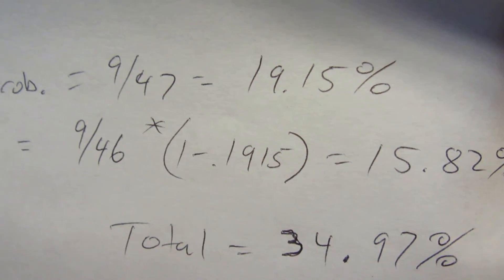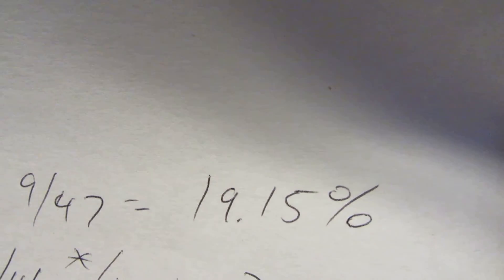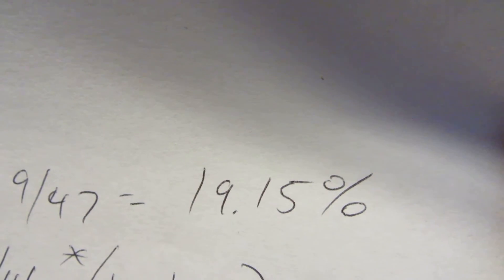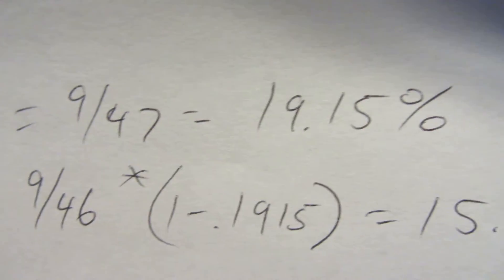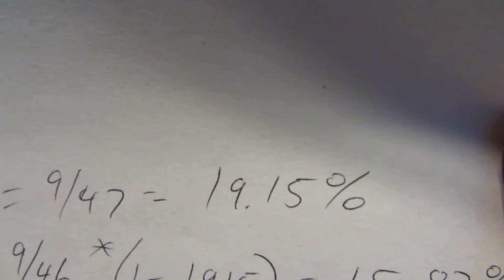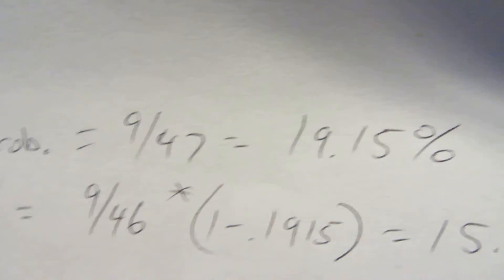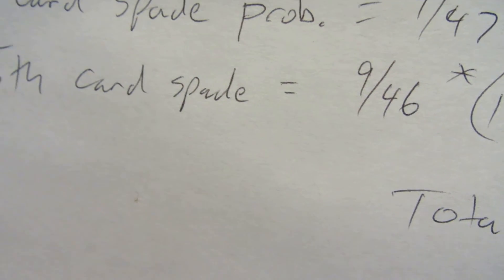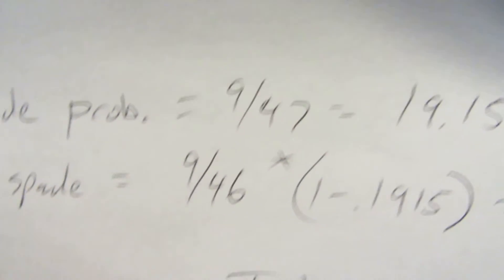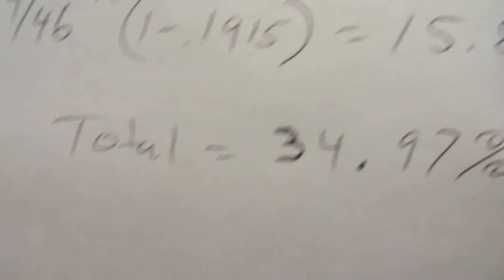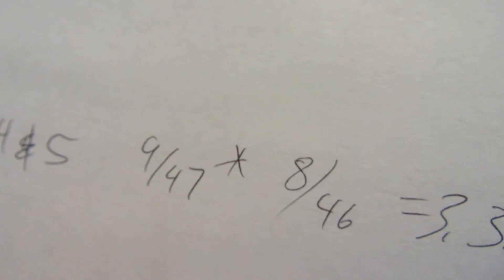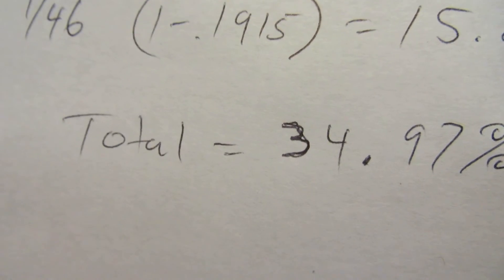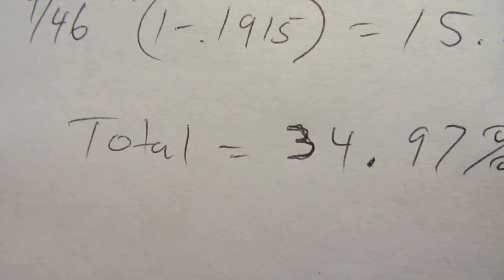If we add that into our total then we would have to take our 19.15 up here times 1 minus again. Or 1 minus 9 over 46. So the probability of missing on the 5th. So that this just becomes hit-miss. This becomes miss-hit. And then hit-hit. And then you'll end up right back here at 34.97%. So anyway.